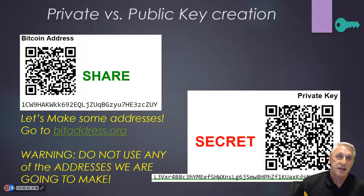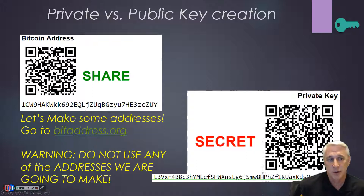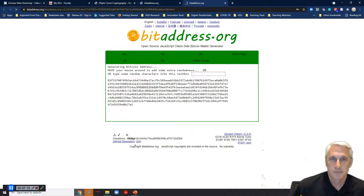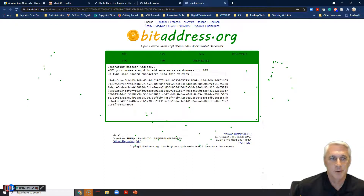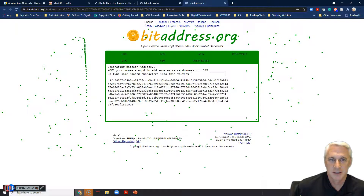You get to play with this at bitaddress.org for one of the assignments. You can generate both public and private keys as shown in the example. Notice this is the 64 hexadecimal number here, and this is also a 64 hexadecimal number down here — one is public and one is private. On the website, they have a fun interface where as you move the mouse, it keeps generating and randomizing the address.